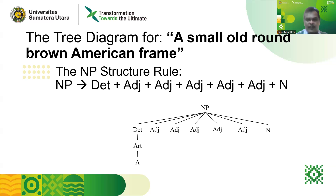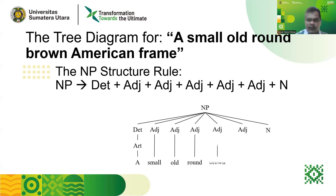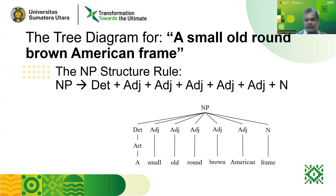We just put the words for each of the constituents. So we have 'a' for the article, 'small' for the first adjective, 'old' for the second adjective, 'round' for the third adjective, 'brown' for the fourth adjective, and 'American' for the last adjective. To complete this analysis, the core of the phrase is represented by the word 'frame.'